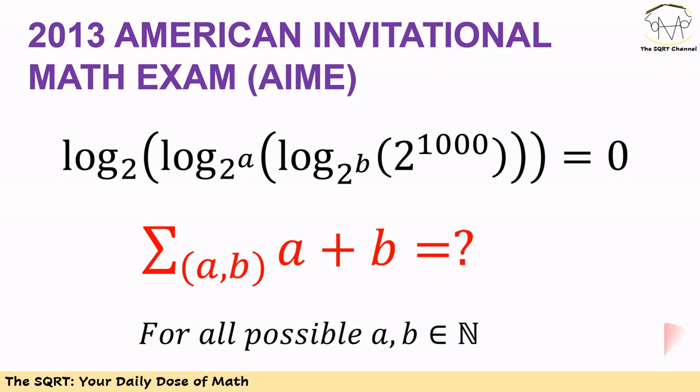In this problem we have 2 to the power of 1000. We get log base 2^b from this number, and then we get another log in base 2^a from the result, and at the end we get log base 2 of the result. We want to have this expression equal to 0. And we want to find all possible a and b as positive integer numbers, and then find the sum of a plus b for all possible a and b.